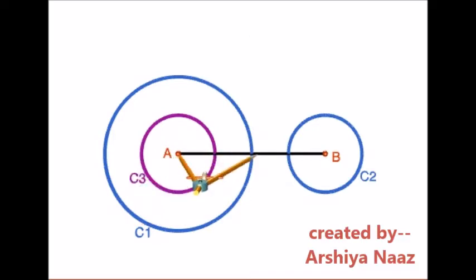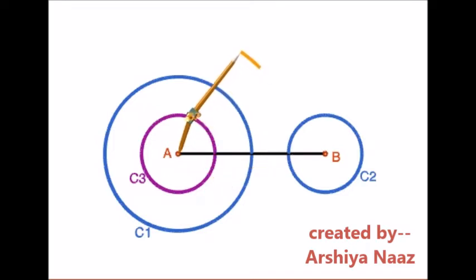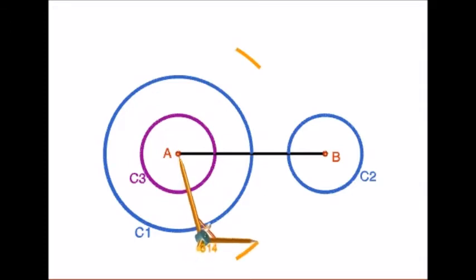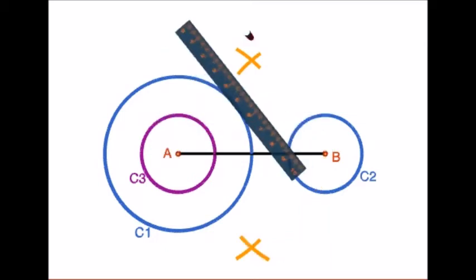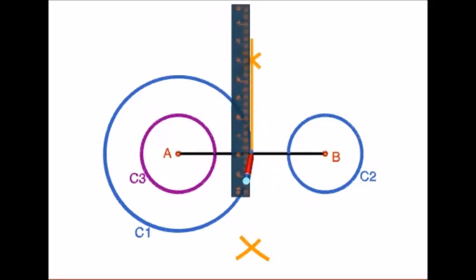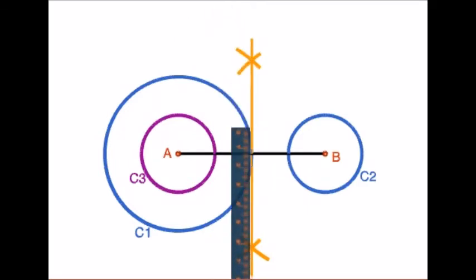Now we have to construct a perpendicular bisector to line AB. For this, take a radius equal to more than half of line AB. Draw arcs on both sides of the line AB as shown on the screen. Let the arcs intersect and draw a line passing through the points of intersection of the arcs. This line intersects line AB at M.